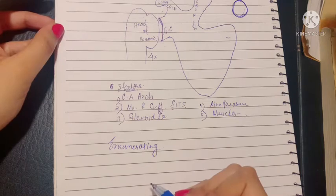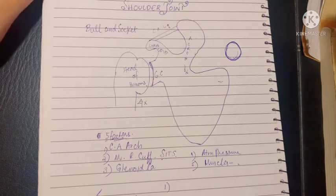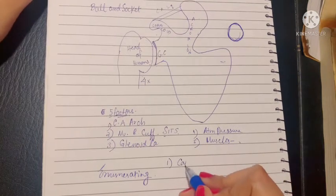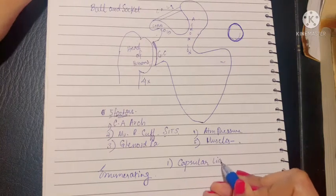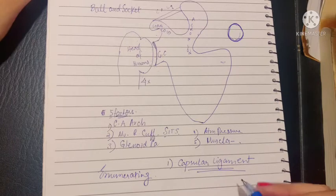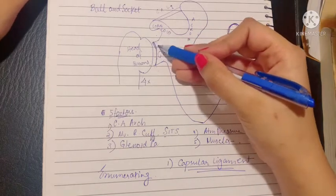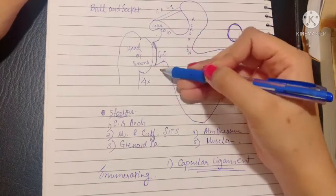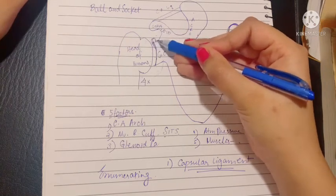The first is the capsular ligament. Basically, capsular ligament can also be called the capsule of the joint. The capsular ligament is attached medially to around the glenoid cavity, extending beyond the supraglenoid tubercle.